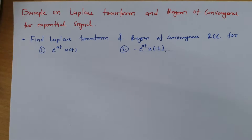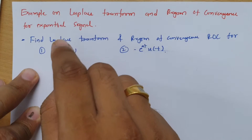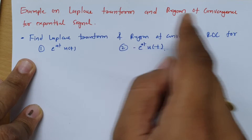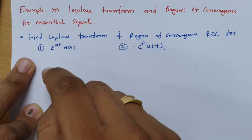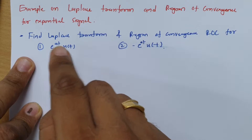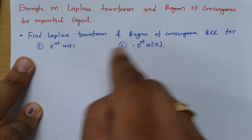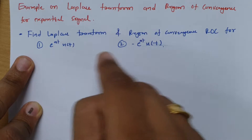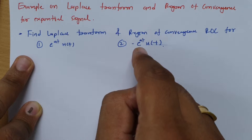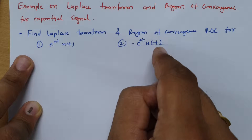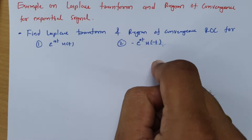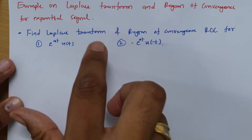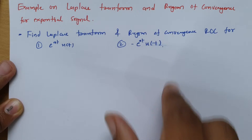Welcome to the signal and system lecture series. In this session, I will be explaining an example on Laplace transform and region of convergence for exponential signals. The equation is: find the Laplace transform and region of convergence for two signals — one is e to the power at times u(t), and second is minus of e to the power at times u(minus t).